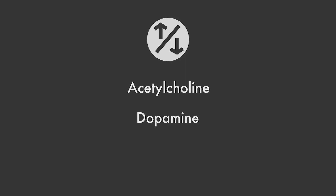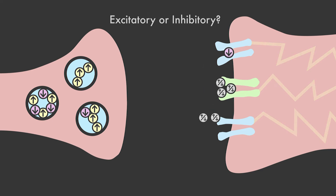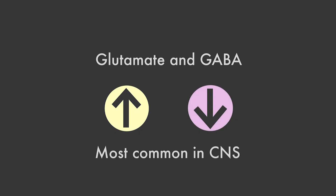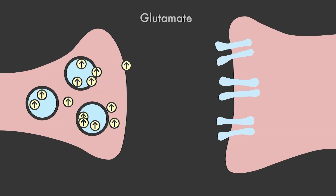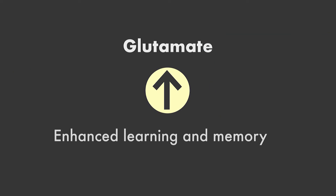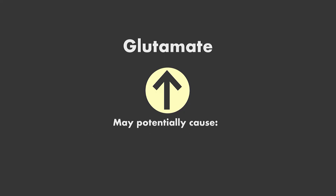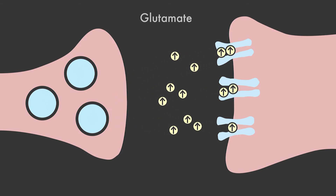Now, some neurotransmitters such as acetylcholine and dopamine can have both excitatory and inhibitory effects depending on the type of receptors that are present. Glutamate and GABA are the most common neurotransmitters in the central nervous system. Neurons in virtually every brain area use these two chemical messengers to communicate with each other. Glutamate rapidly excites neurons, increasing the odds that they will talk with other neurons. The release of glutamate is associated with enhanced learning and memory. When abnormally elevated, glutamate may contribute to schizophrenia and other mental disorders because in high doses it can be toxic, damaging neural receptors by overstimulating them.